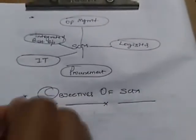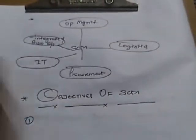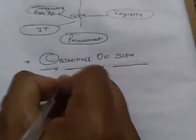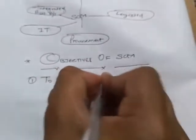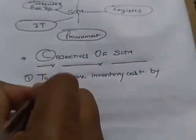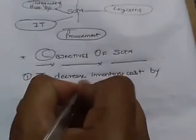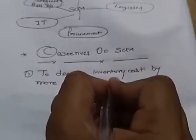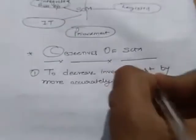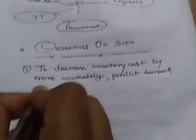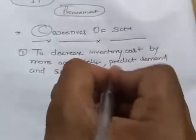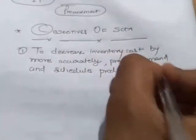The first objective of SCM is to decrease cost — specifically inventory cost — by more accurately predicting demand and scheduling production to match it.